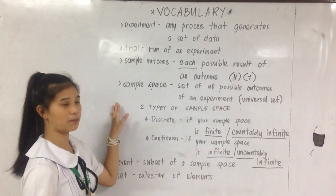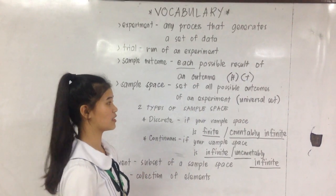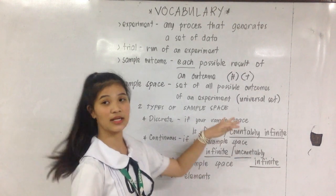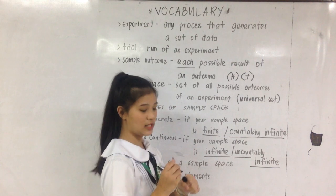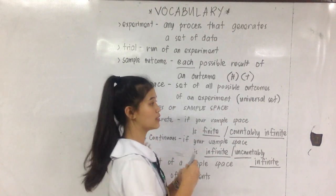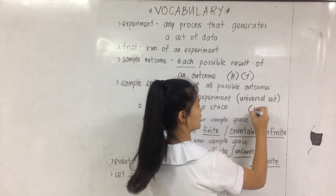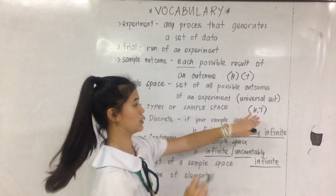Next is the sample space. The sample space is the set of all possible outcomes of an experiment. This could also be your universal set. For example, the coin. The coin has only two possible outcomes. That could be head or tail. So this is your sample space.